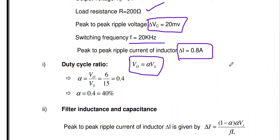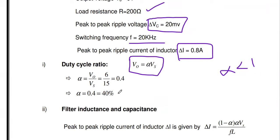So α = 0.4. The duty cycle is always less than 1 — it is a fraction. In percentage terms: 0.4 × 100 = 40%. The duty cycle is 40% and the first part is calculated.